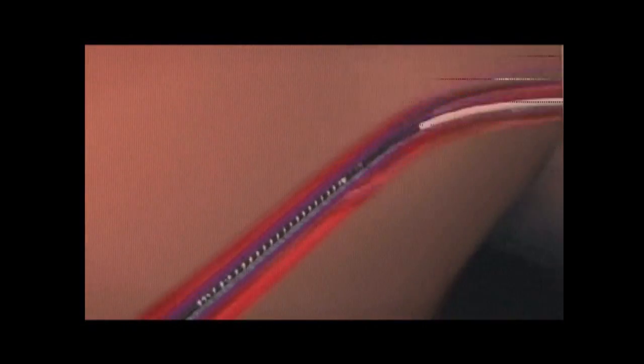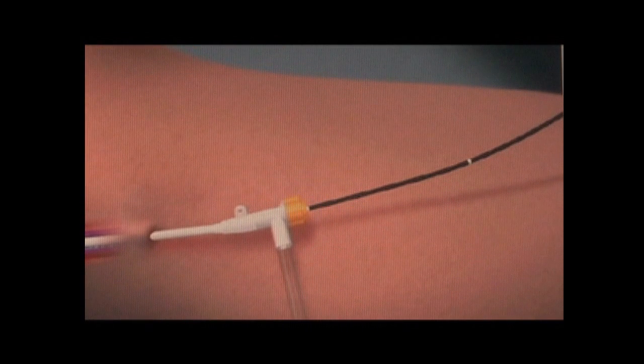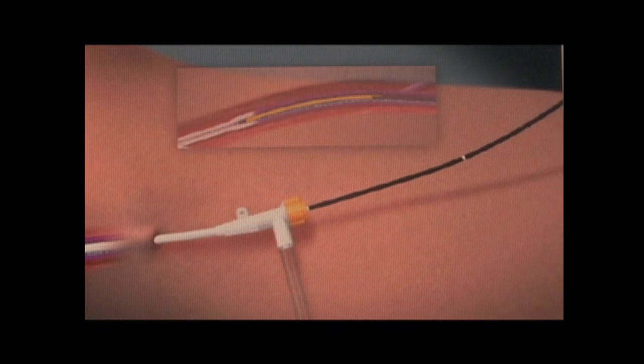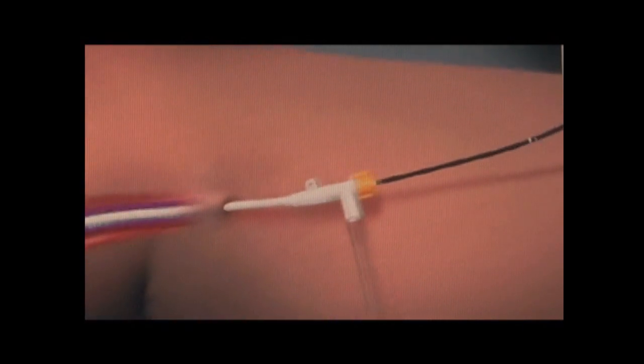The patient is awake during this procedure, slightly sedated, and feels no pain during this closure of the vein. The catheter has marks every 7 cm to assist the operating surgeon in precise retraction of the catheter.